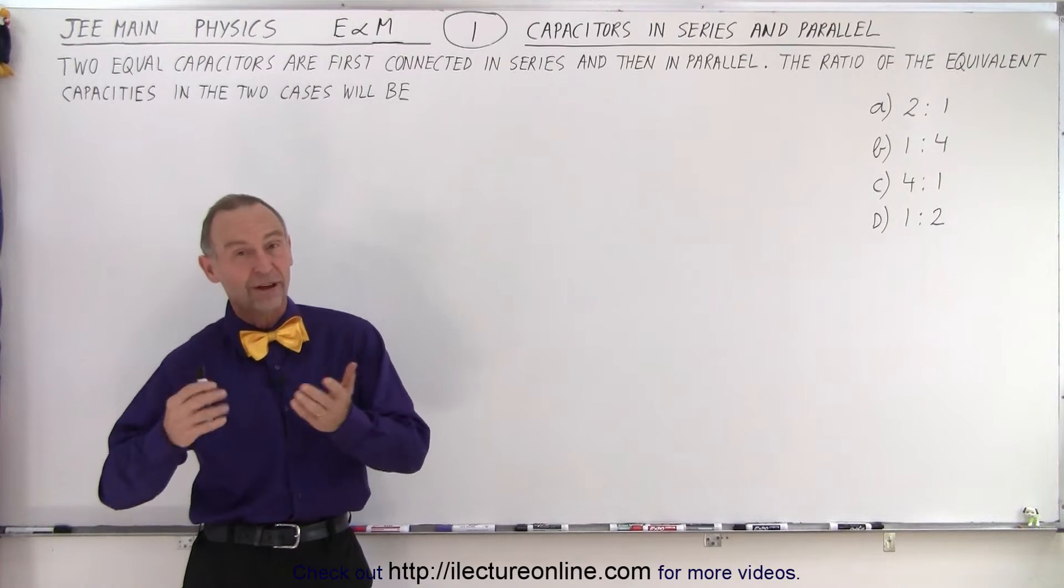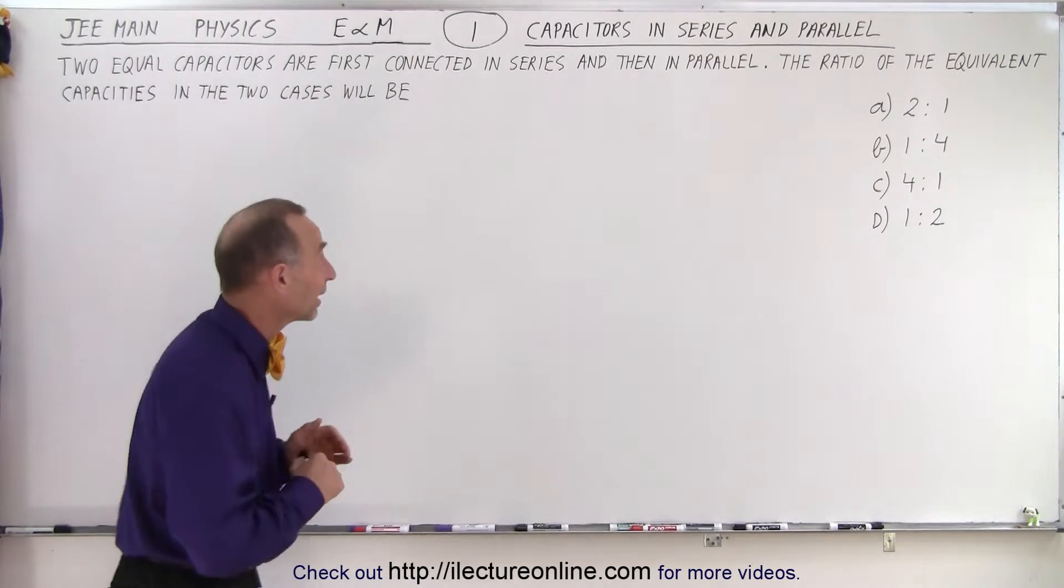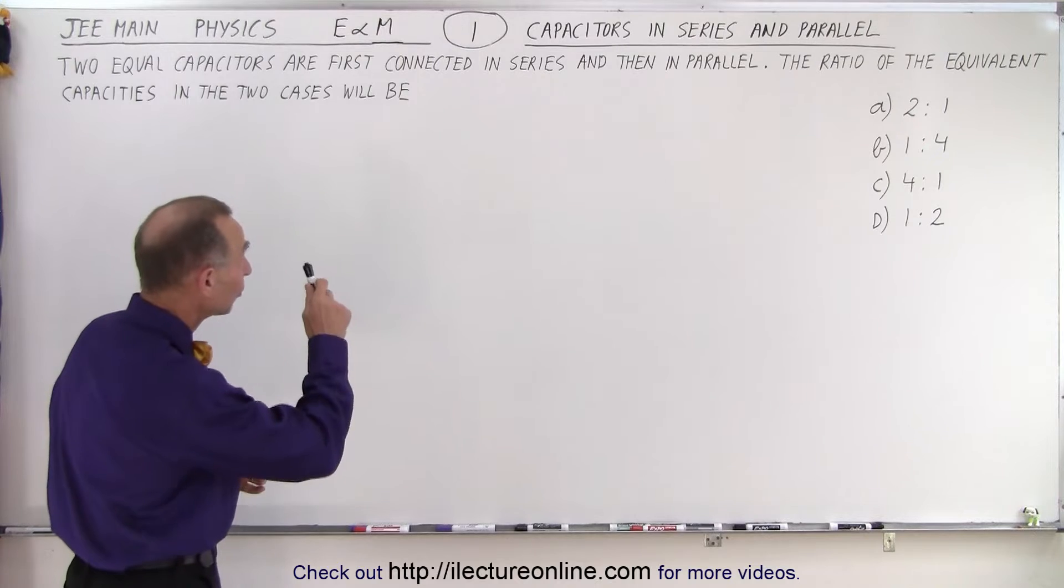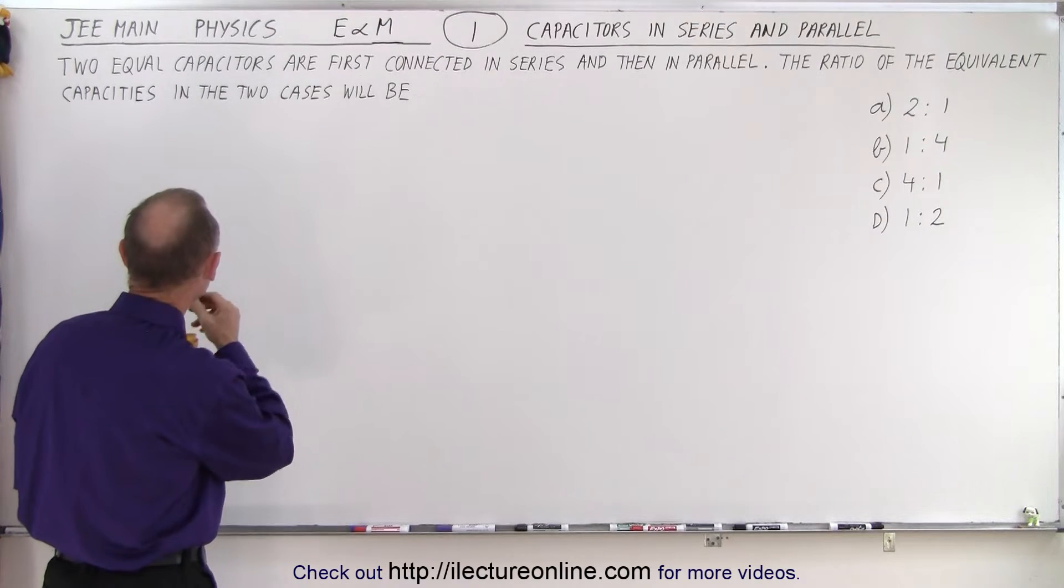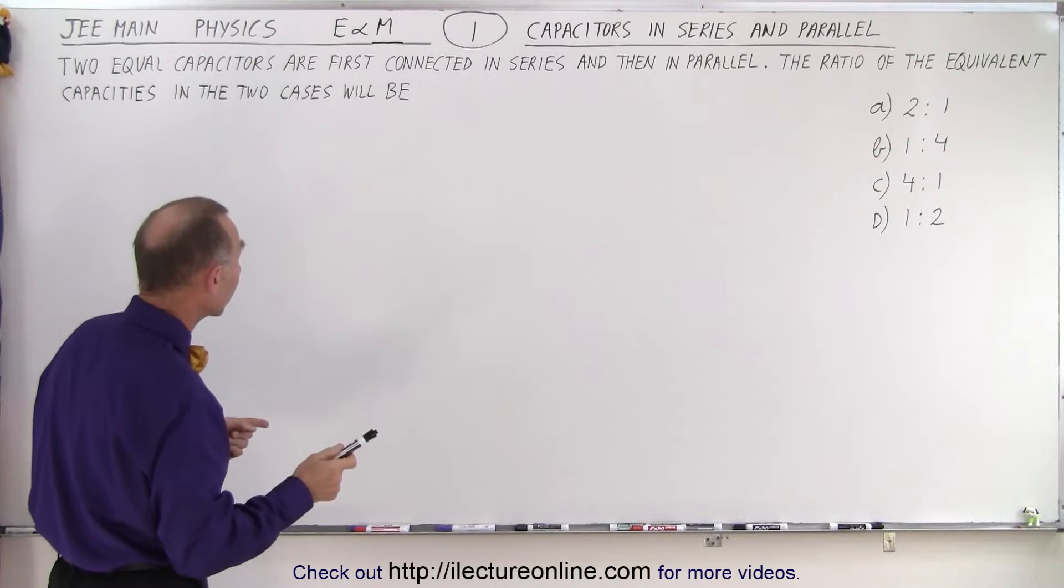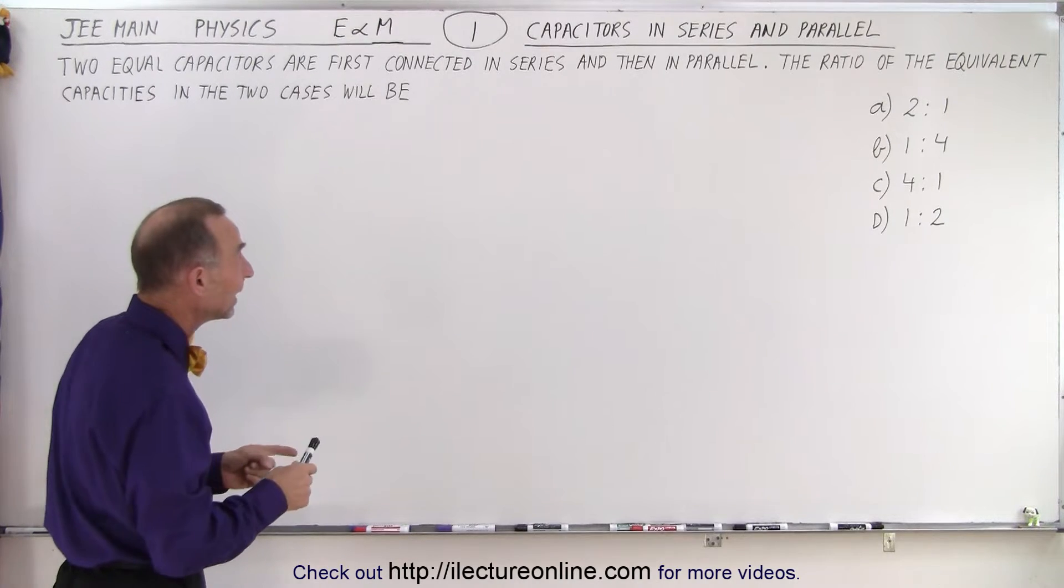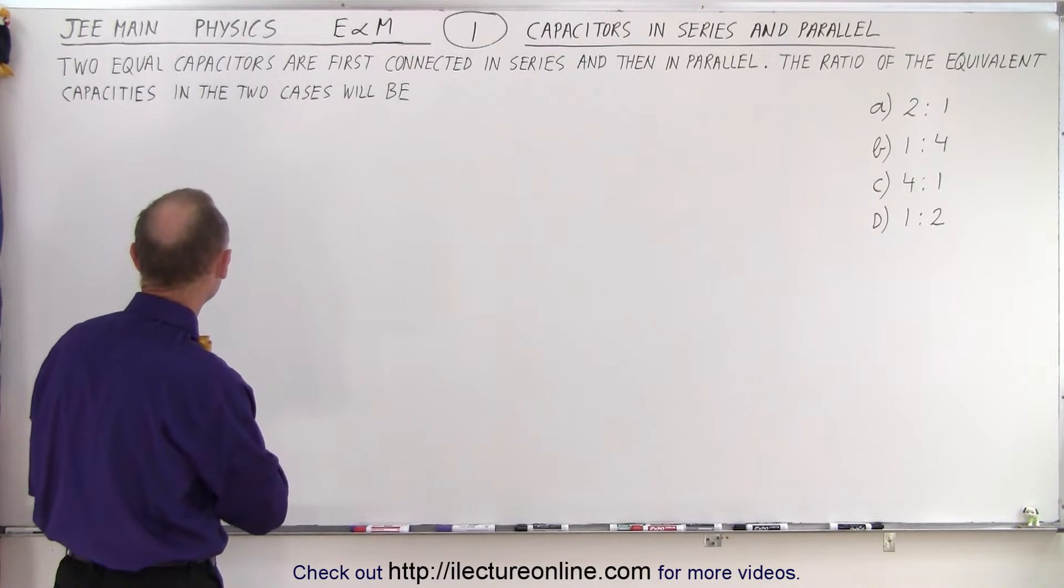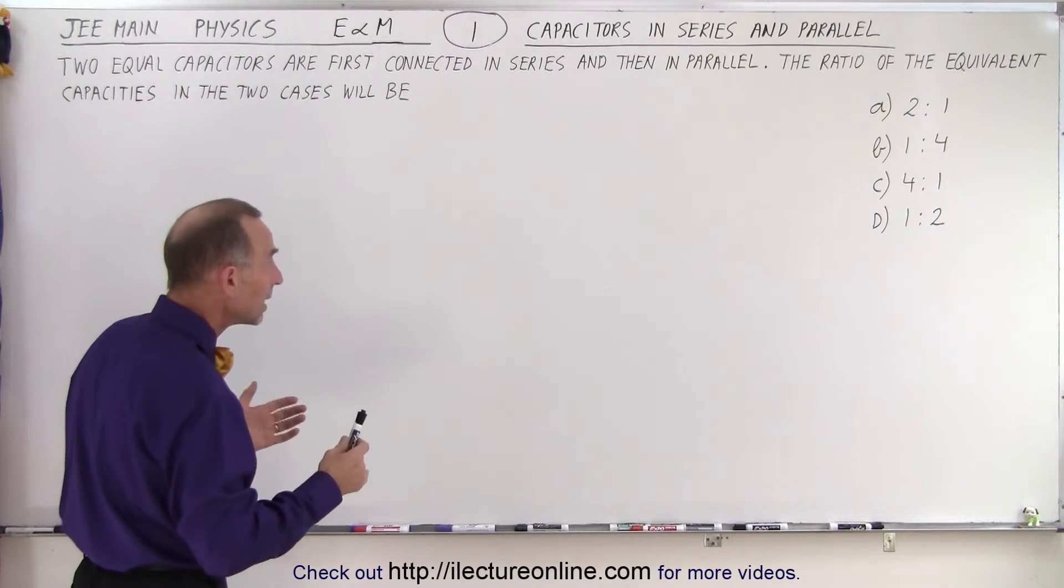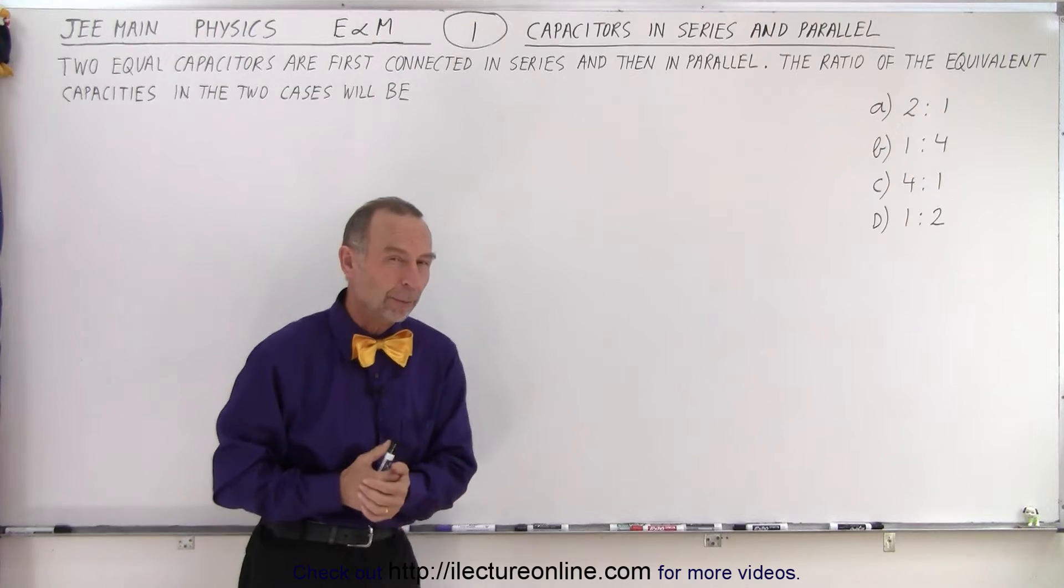If not, we'll just have to work out the equation. So let's see what they have in store for us. It deals with capacitors in series and in parallel. And they tell us that two equal capacitors are first connected in series and then in parallel. Well, the ratio of the equivalent capacities in the two cases will be, and we're looking for one of the four possible answers.